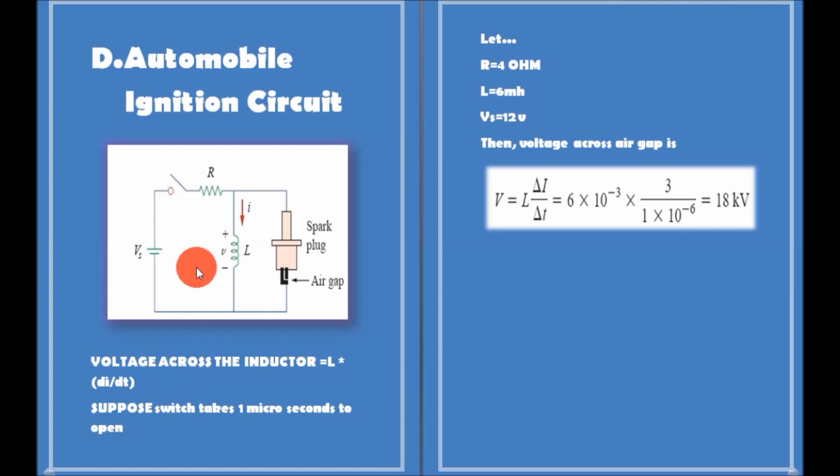When the switch is suddenly opened, a large voltage is developed across the inductor due to the rapidly collapsing field, causing a spark or arc in the air gap. The spark continues until the energy stored in the inductor is dissipated in the spark discharge.